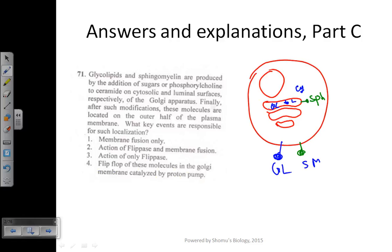The thing is, try to imagine the scenario. According to the question, glycolipids would be facing the cytosolic side while sphingomyelin would be facing the luminal side of the Golgi. As the vesicle would be budding from Golgi, we know that the vesicle will bud from Golgi.